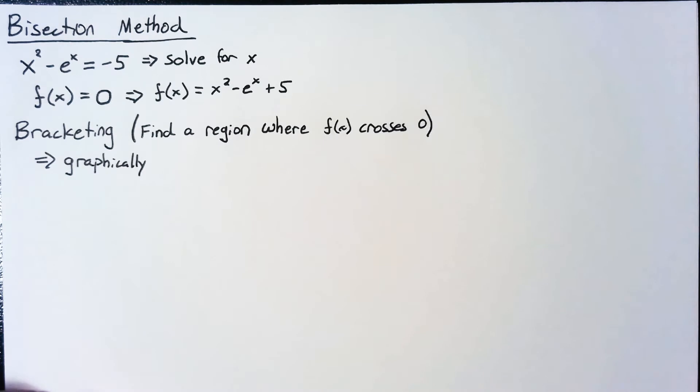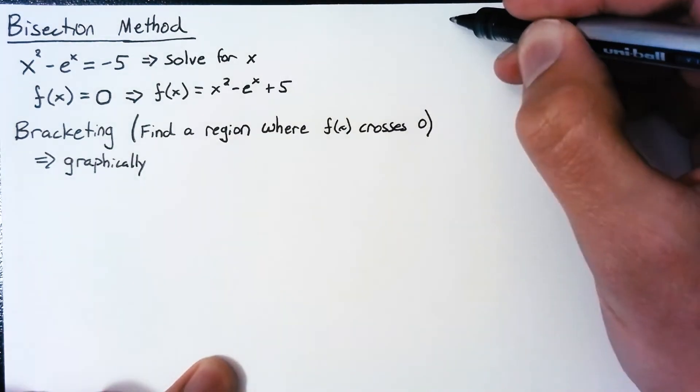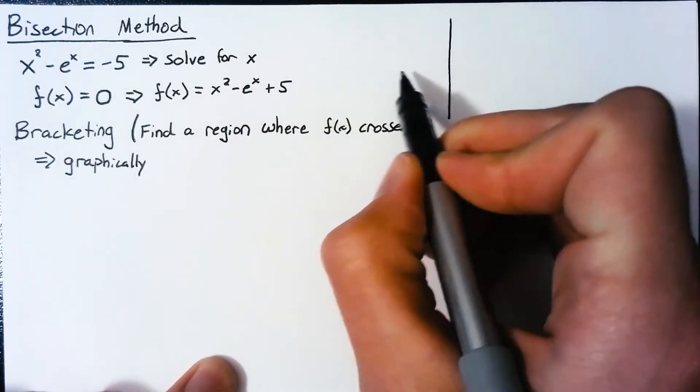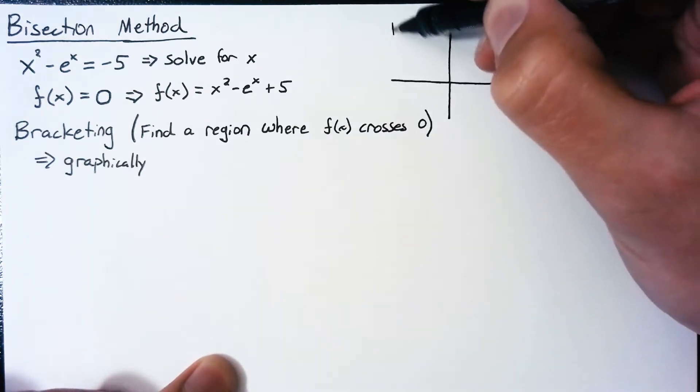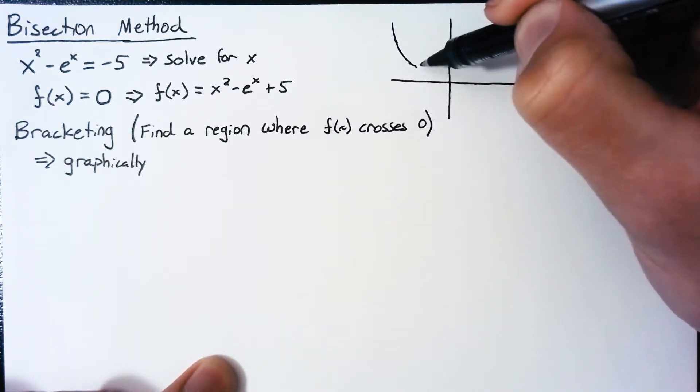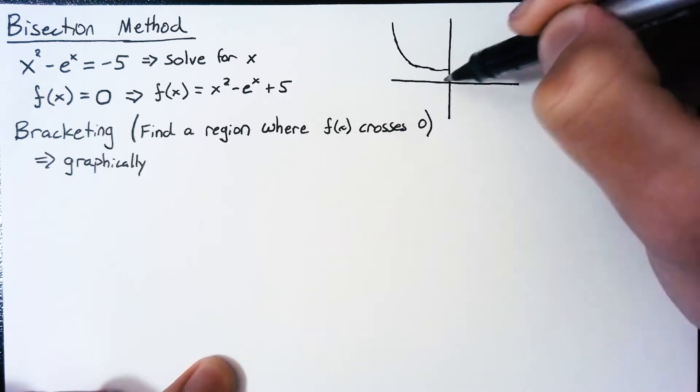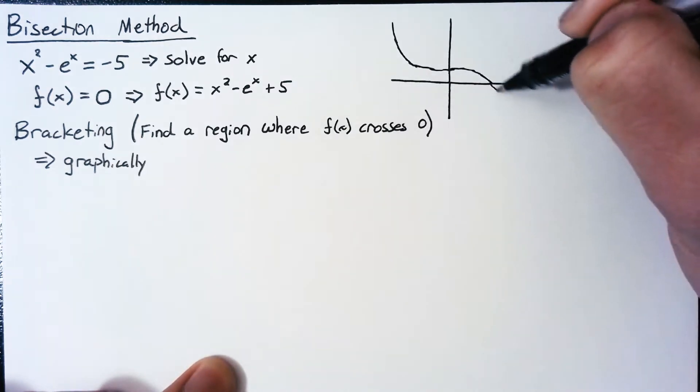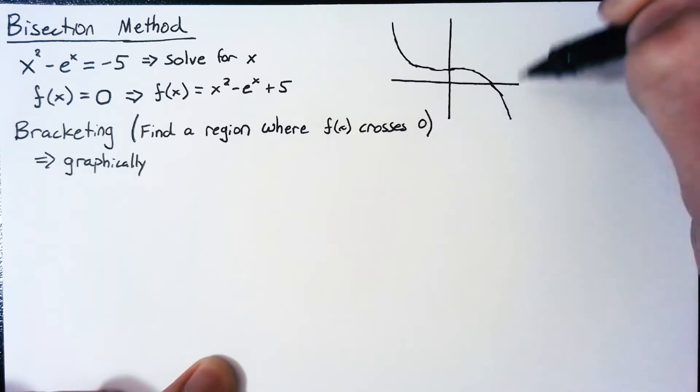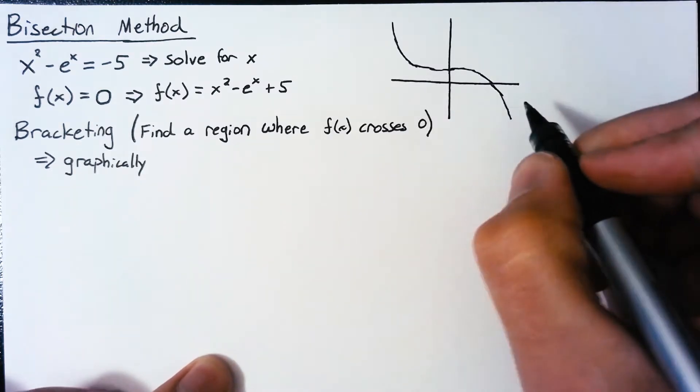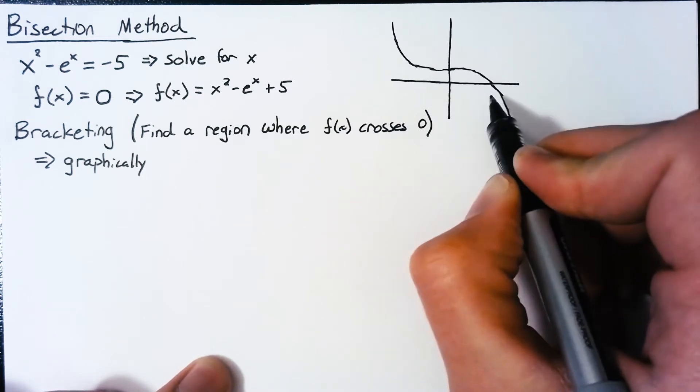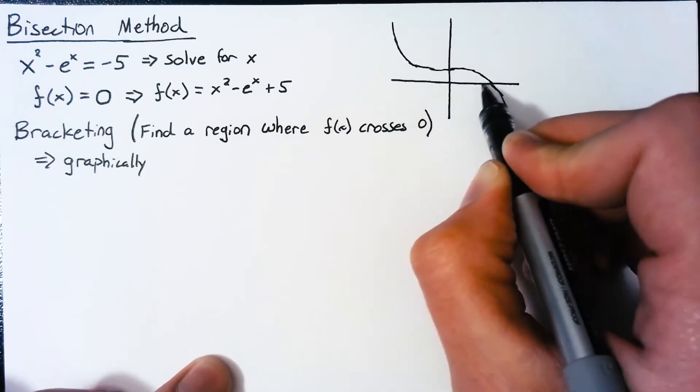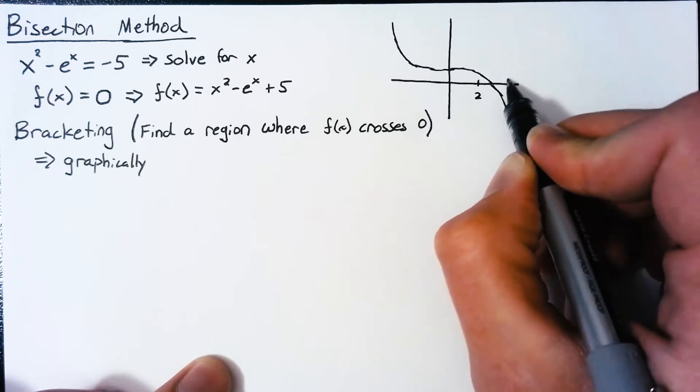So if we know our function, we can usually plot that function. Plotting our function here yields something that looks like a parabola on the left-hand side of x equals 0, and then kind of crosses into negative e to the x. So if we're interested in this region of space right here, which is around x equals 2 and x equals 3.